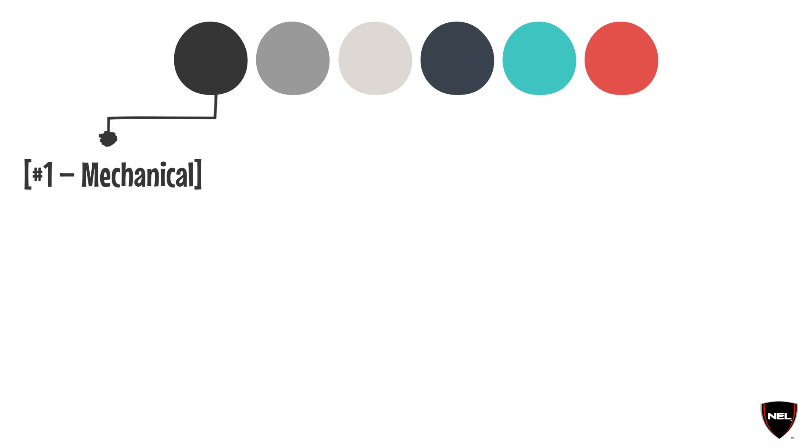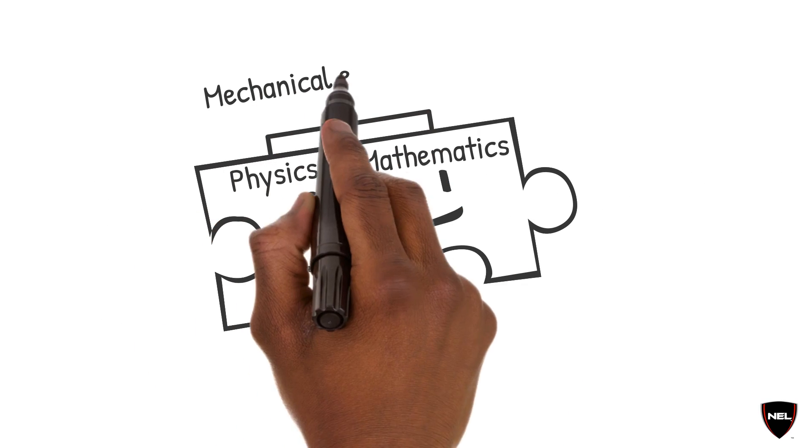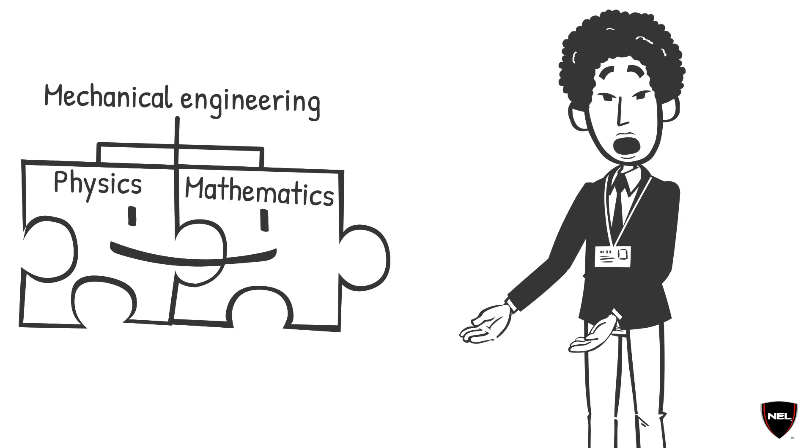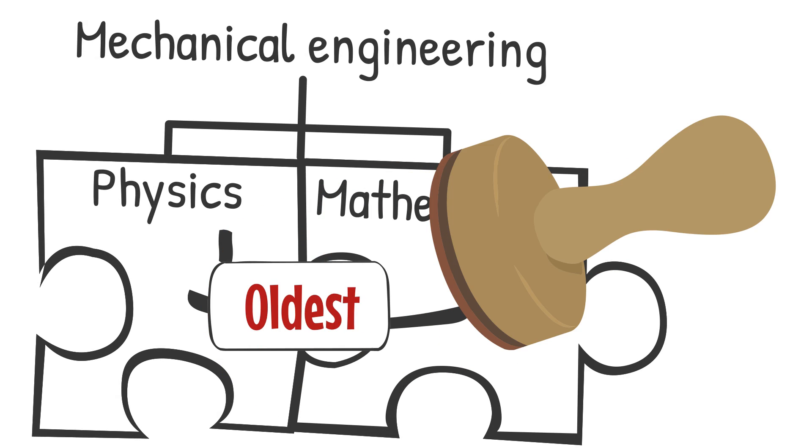Number 1, Mechanical. Mechanical engineering is an engineering branch that combines engineering physics and mathematics principles with materials science to design, analyze, manufacture, and maintain mechanical systems. It is one of the oldest and broadest of the engineering branches.